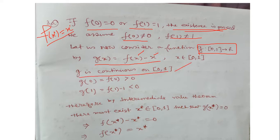Now, g(0) = f(0) − 0 = f(0), which is positive by the given property. And g(1) = f(1) − 1, which is less than 0 by the given property.